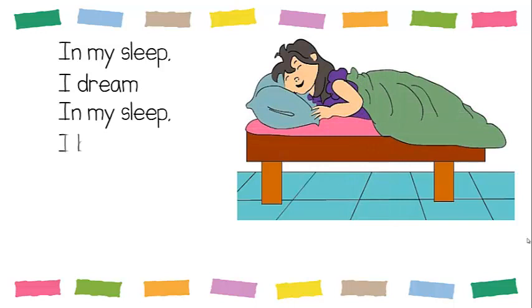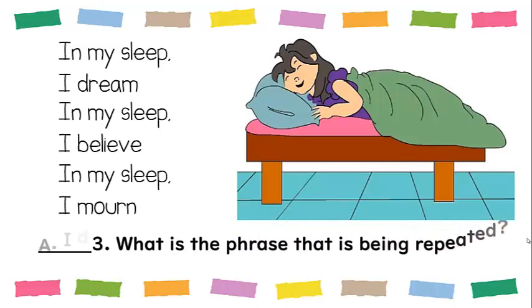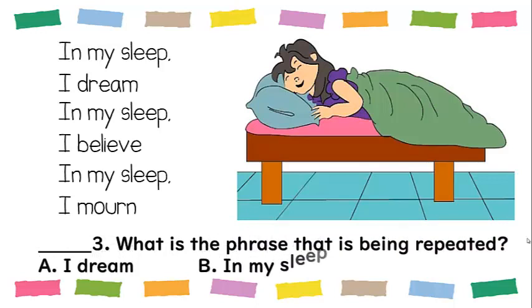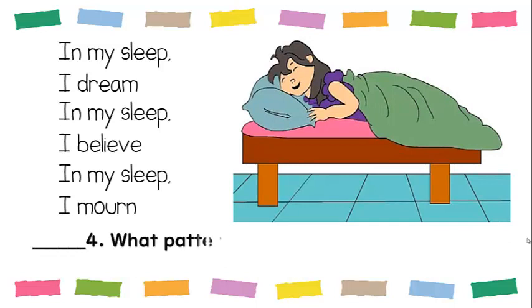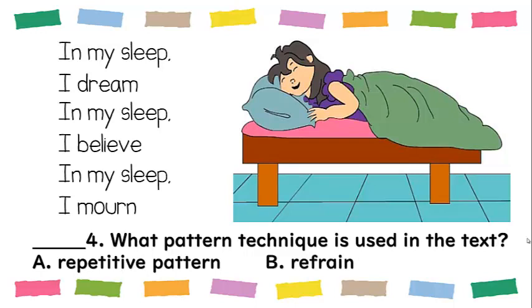Next: In my sleep, I dream. In my sleep, I believe. In my sleep, I mourn. Number three: What is the phrase that is being repeated? A. I dream. B. In my sleep. Cool — letter B. Number four: What pattern technique is used in the text? A. Repetitive pattern. B. Refrain. Bravo — it's letter B, refrain.